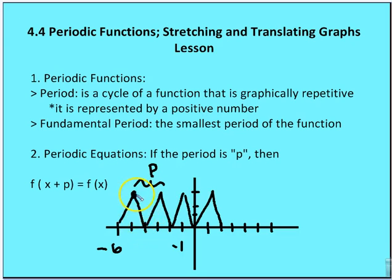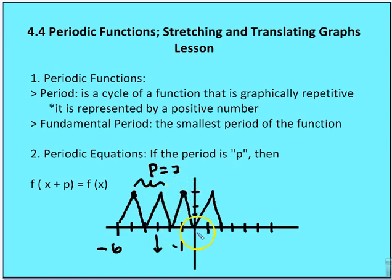The next peak would be at negative 3, 5. So f of negative 5 plus 2 — which is the period — equals f of negative 3. At negative 3 the value of y is 3. At negative 5 it's also 3. Subtracting 2 again gives negative 1, where y is also 3. Adding 2 more gives x equals 1, where the height is again 3. If we add the period to any value of x, we end up at the same point in that cycle.